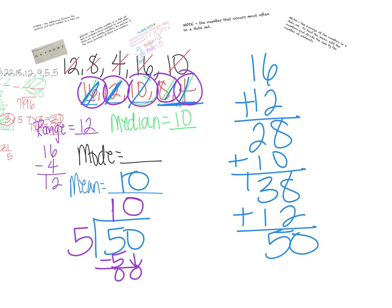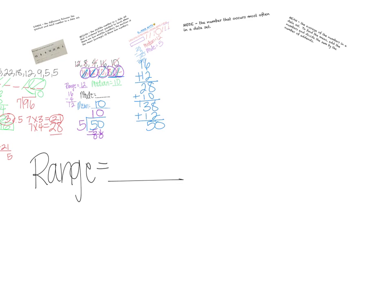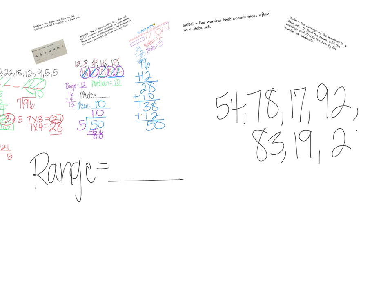I'm going to leave you with a data set so you guys can practice some of this on your own. Remember all your steps to find range — go ahead and pause the video so you can find your range. I hope all of you remembered first to put them in order from greatest to least. You would have had 92 and 17. The difference between 92 and 17 is 75. Your range is 75.